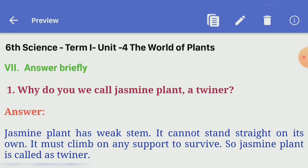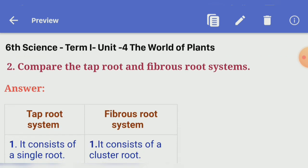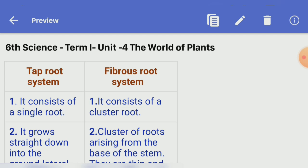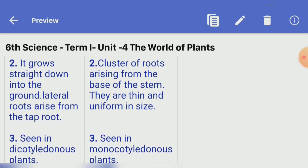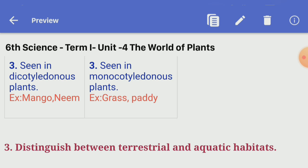Answer briefly. First one, why do we call jasmine plant a twiner? Answer: jasmine plant has a weak stem; it cannot stand straight on its own and must climb on any support to survive. So, jasmine plant is called a twiner. Second one, compare the taproot and fibrous root system. Taproot system: it consists of a single root that grows straight down into the ground; lateral roots arise from the taproot; seen in dicotyledonous plants; examples: mango, neem. Fibrous root system: it consists of a cluster of roots arising from the base of the stem; they are thin and uniform in size; seen in monocotyledonous plants; example: grass.